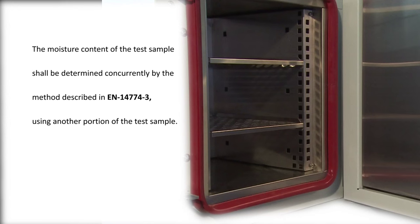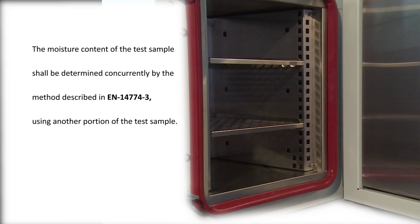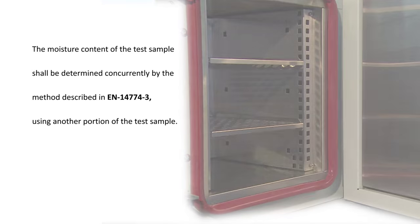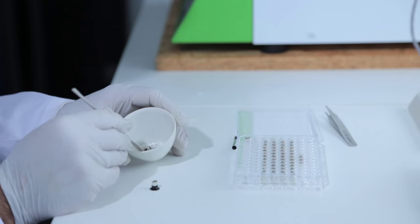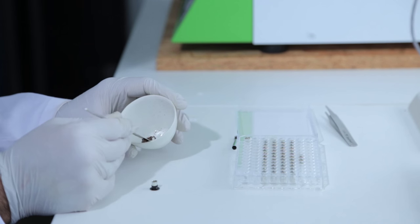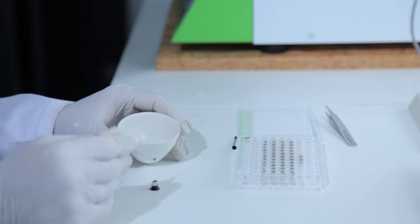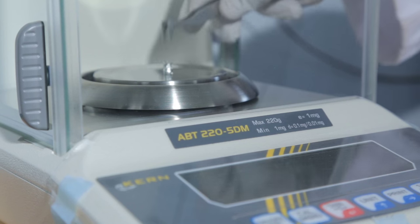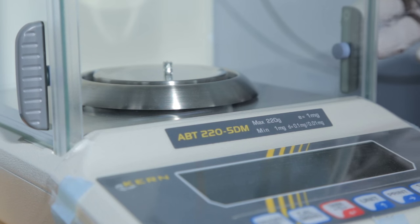The moisture content of the test sample shall be determined concurrently by the method described in EN-14774-3 using another portion of the test sample. Weigh to the nearest 0.1% relative 1.5 to 2.5 milligrams of the test sample. The test portion shall be weighed directly into the sample.